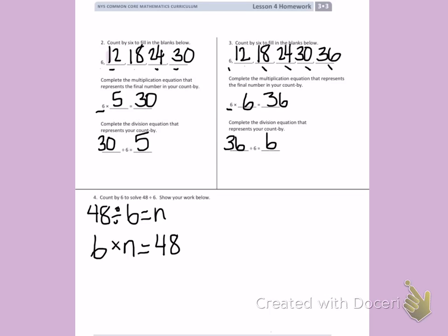Now I'm going to skip count by 6. I'm going to do a count by 6, 12, 18, 24, 30, 36, 42, 48. That gives me a total of one, two, three, four, five, six, seven, eight times that I counted by 6. So, n equals 8.